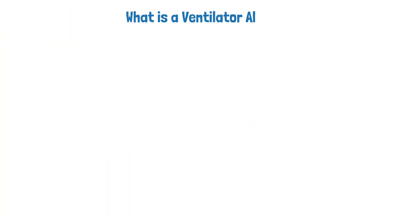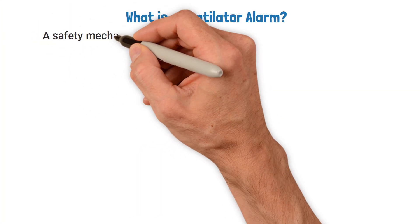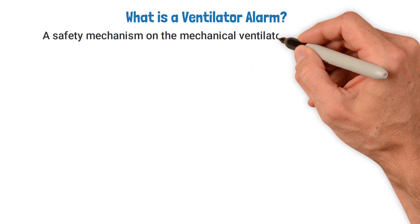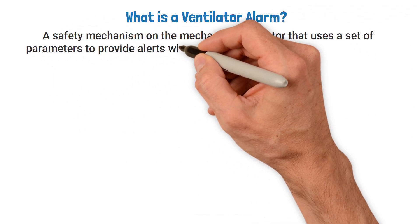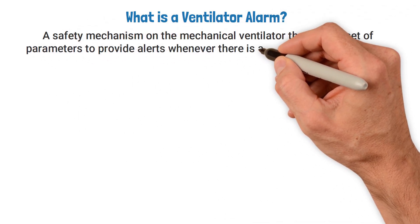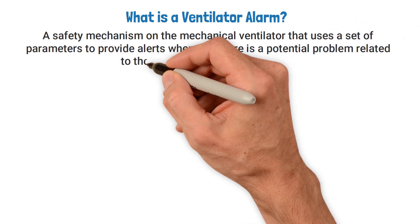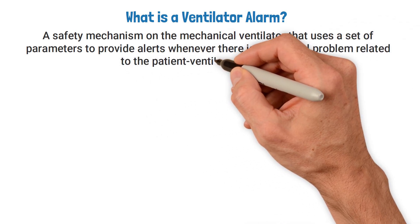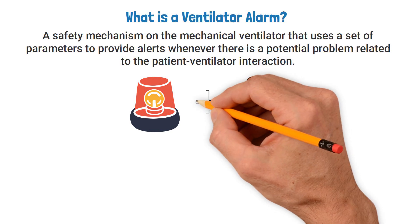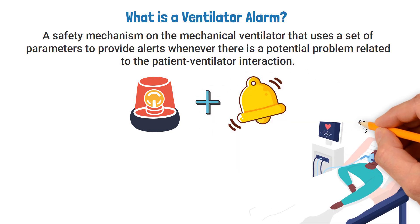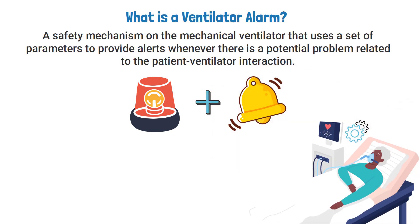A ventilator alarm is a safety mechanism on the mechanical ventilator that uses a set of parameters to provide alerts whenever there is a potential problem related to the patient-ventilator interaction. The alarms can be visual, audible, or both depending on the ventilator setting and the patient's condition.